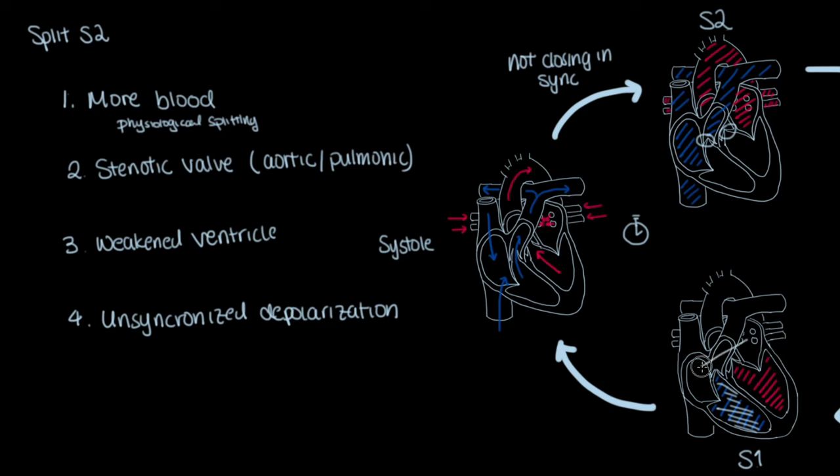It can also happen if there is an atrial septal defect that constantly shunts more blood from the left atrium to the right atrium, thus the right ventricle constantly gets more blood than it's supposed to.